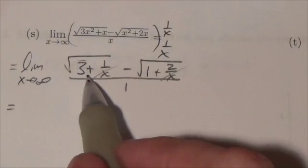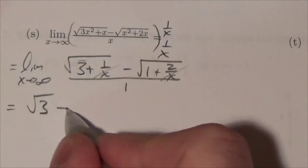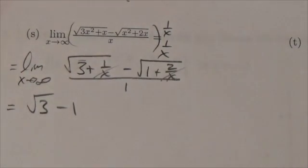and so I'm left with root 3 minus the square root of 1, but the square root of 1 is just 1. So this ends up being just root 3 minus 1. And there's our infinite limit.